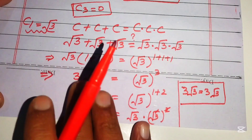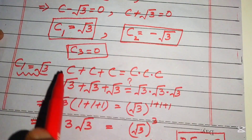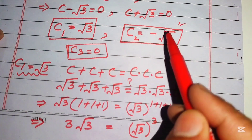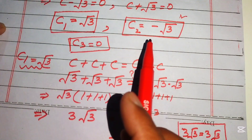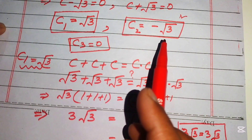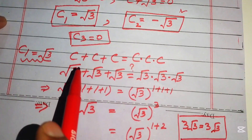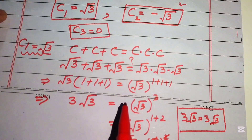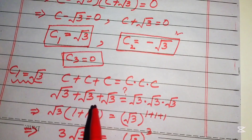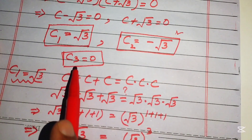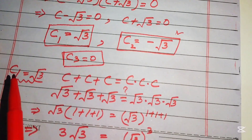Similarly, for c₂ equals minus square root of three, you can follow the same pattern to verify it. Now we check the third value, c₃ equals zero.